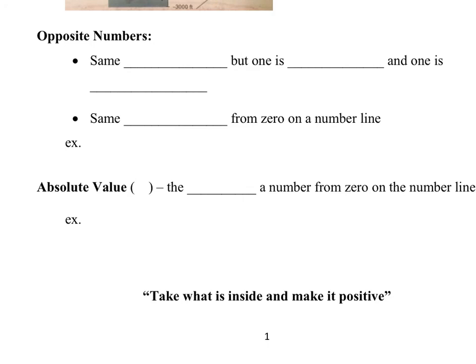Opposite numbers are going to be the same number but one is positive and one is negative. So you could do an example like 5 and negative 5, or 2 and negative 2. Order doesn't matter. You could say negative 3 and 3, but it's going to be the same number, just one's positive and one is negative.